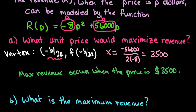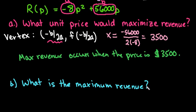So the next question that they ask us is what is the maximum revenue? So remember that the maximum revenue is just the y coordinate of the vertex. So we're simply going to use the same information that we're given and we're going to plug it into our R of P equation.